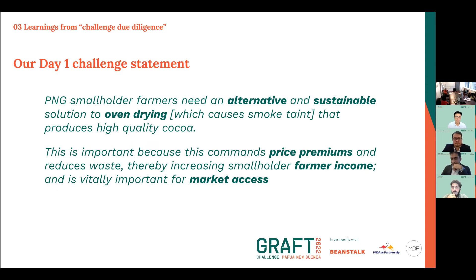In terms of where we started: we focused on this challenge around smoke taint. To read it aloud — PNG smallholder farmers need an alternative and sustainable solution to oven drying that produces high-quality cocoa. This is important because it helps command price premiums, reduce waste, and thereby increase smallholder farmer income. It's also important for the medium to long term to ensure we continue to have market access and grow into new high-value markets. That was the starting premise of our conversations.